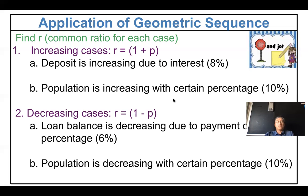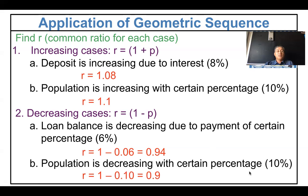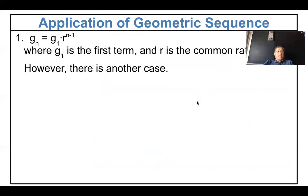So what is r for 8% increase? It's 1.08 — that's 1 plus 0.08. For 10% increase, it's 1.1. If decreasing by 6%, you do 1 minus 0.06, which is 0.94 — that will be r. Decreasing by 10% gives 0.9. You get the idea.